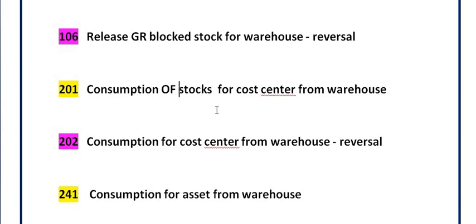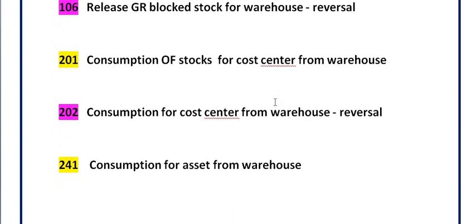Do not try to consume maintenance stock or capital stocks against movement type 201, because once you consume this stock against a direct cost center, it will directly hit your general expenses. Movement type 202 is the reversal of movement type 201 — consumption for a cost center from the warehouse, reversed.